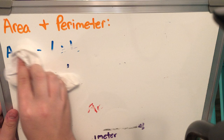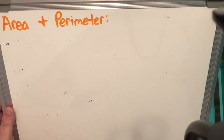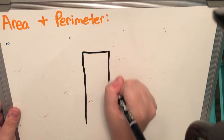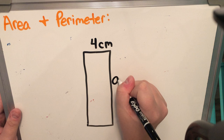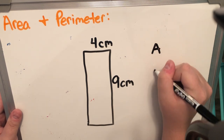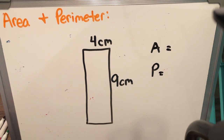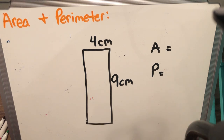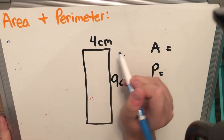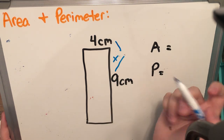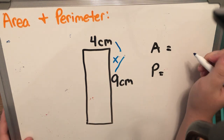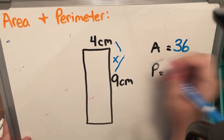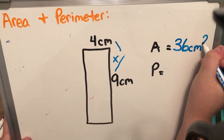Let's get started with a couple of problems. I'm going to draw a long rectangle where the length is four centimeters and the width is nine centimeters. I'll put P and A to the side so I know what I'm solving. I'm going to start with area. I need to multiply nine times four. You've got to know your nine times tables to figure this out. Nine times four is 36, and I have the label of centimeters, so I'm going to put squared.